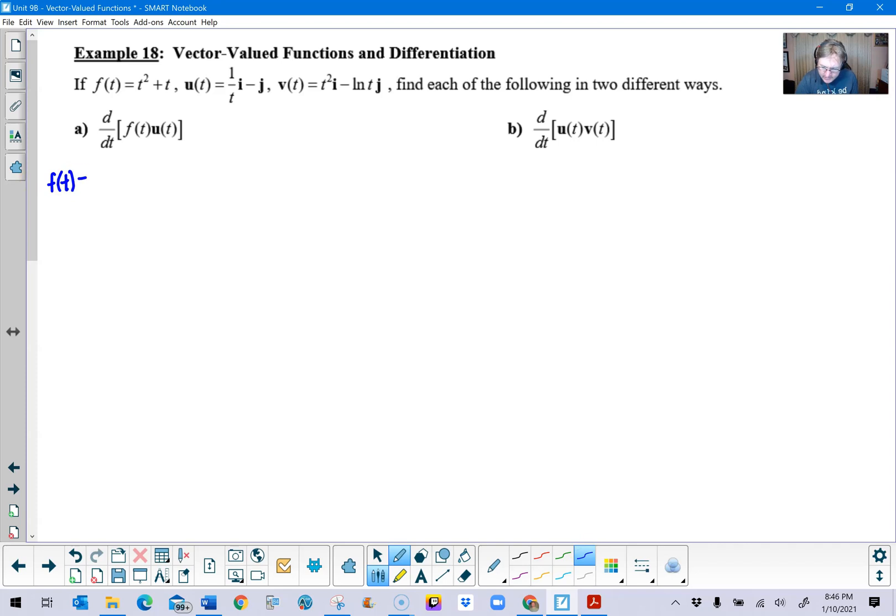f of t times vector u of t. So if this is the way that we wanted to start this, not a derivative yet, but just to simplify this. This t squared plus t is going to multiply through this vector u that I'm going to underline here. So t squared plus t times one over t would be the quantity t plus one. And then the i would still be part of that. And then we have our subtraction and then the quantity t squared plus t multiplied by one is of course t squared plus t and that would be multiplied by j.